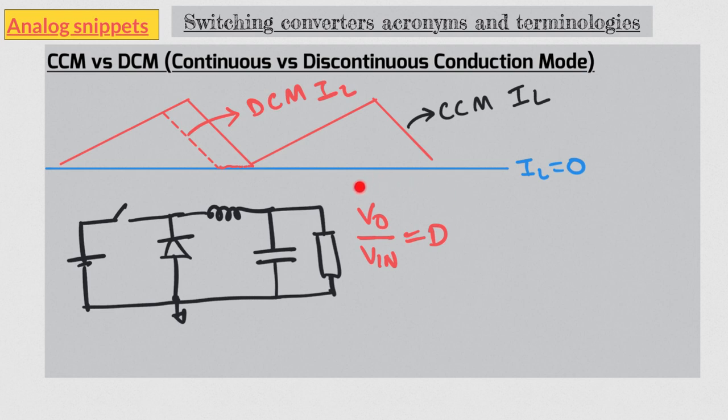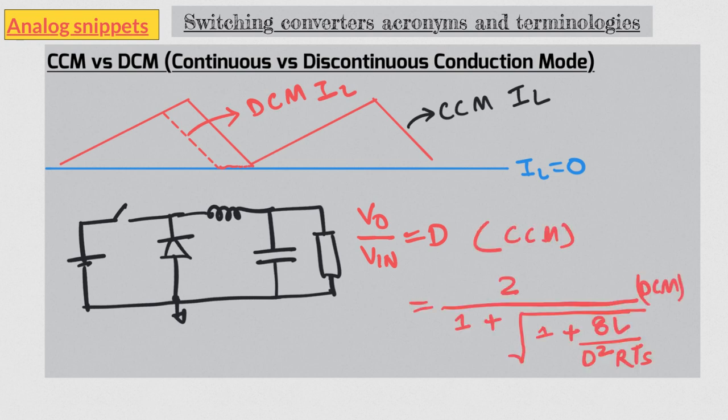This input-output equation of a buck converter is in fact a CCM equation. This relationship does not depend on the load current, at least to the first order. This input-output relation for DCM looks like this. Looks scary, right? And for this reason many designers try to avoid DCM. But DCM has many advantages. It is easiest to stabilize a converter in DCM, and efficiency in DCM is often better than CCM. We will have more to say about DCM in future videos.